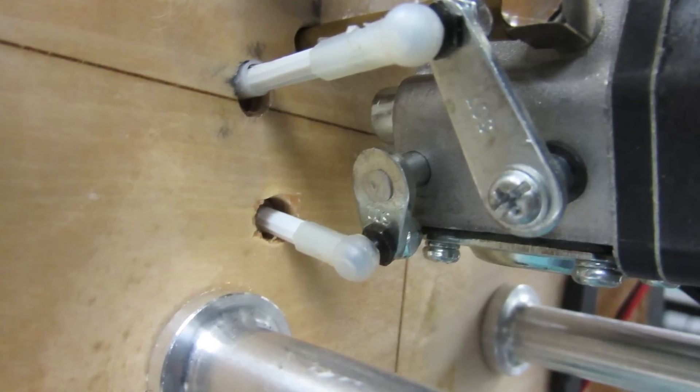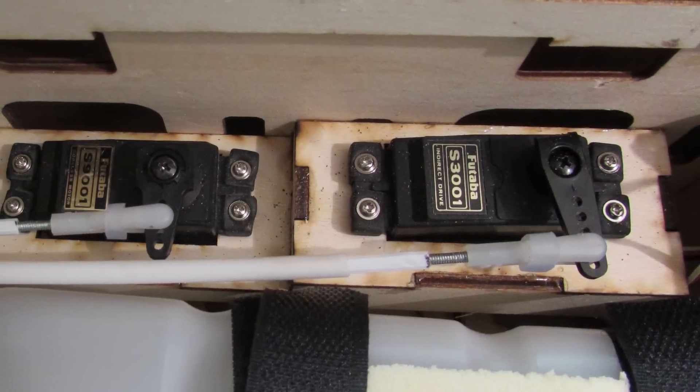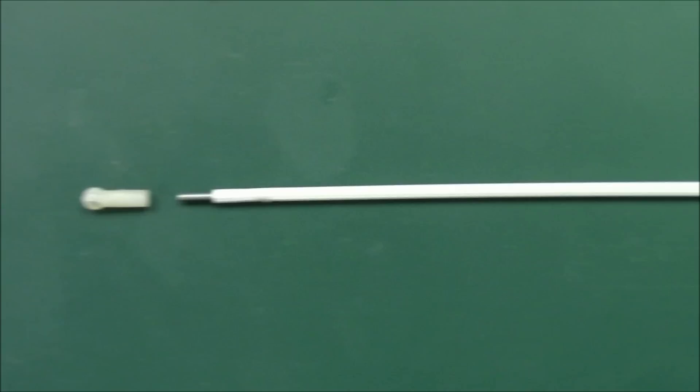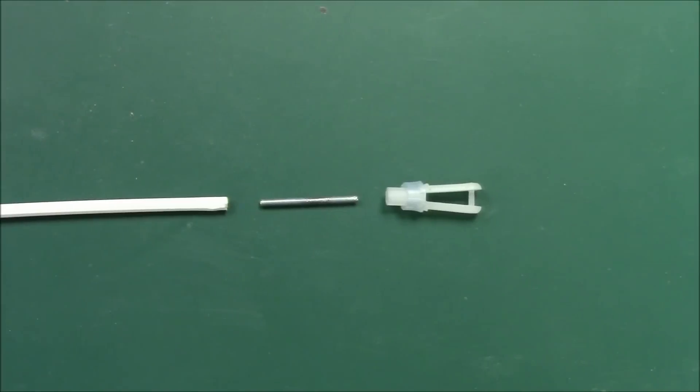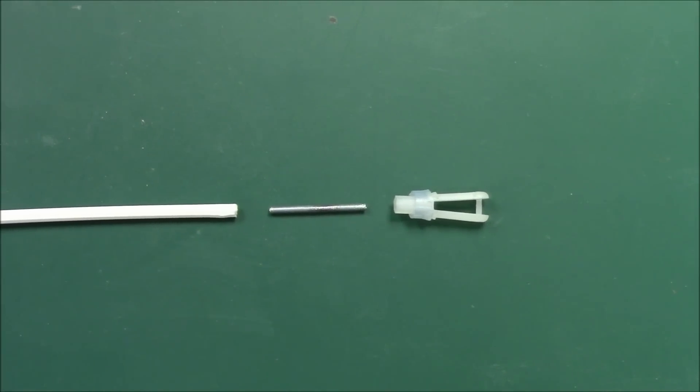In this video I will show you our DLE engine throttle and choke linkage installation. Both linkages are made from nylon inner push rod tube. The flexible nylon allows me to route the push rods easily in the fuselage.